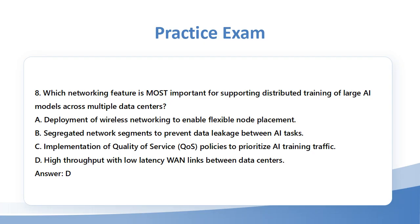Question 8: Which networking feature is most important for supporting distributed training of large AI models across multiple data centers? A. Deployment of wireless networking to enable flexible node placement. B. Segregated network segments to prevent data leakage between AI tasks. C. Implementation of Quality of Service (QoS) policies to prioritize AI training traffic. D. High throughput with low-latency WAN links between data centers. Answer: D.